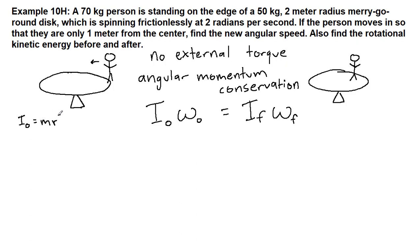This system is comprised of a person standing a certain distance away from the rotation axis and a disc rotating about its center. A disc has the one half in front of it. So we have the person 70 kilograms, and since they start on the edge the radius is 2, then the disc is 50 kilograms and that radius is still 2. We put all that into our calculator and we get 380 kilograms times meters squared.